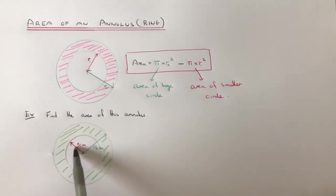So the smaller circle has a radius of 5 centimetres, and the larger circle has a radius of 9 centimetres.